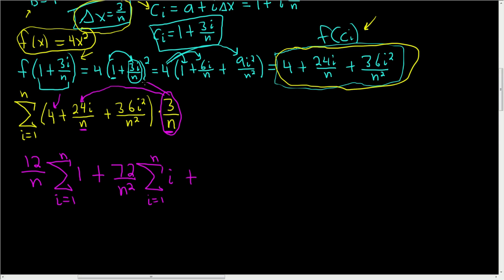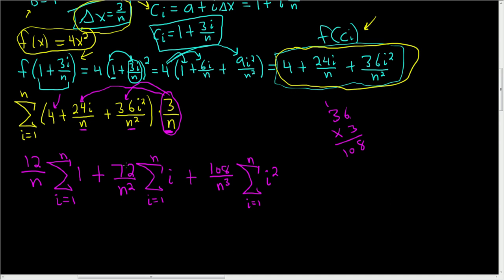Plus 3 times 36. So if you can't do that in your head, just go to the side or pick up a calculator. 3 times 6 is 18. You carry the 1. 3 times 3 is 9. 108, old school. So 108 over n times n squared is n cubed. And then we have the sum as i runs from 1 to n of i squared. So if it doesn't have an i, you can write it outside. Let's go ahead and use the formulas.